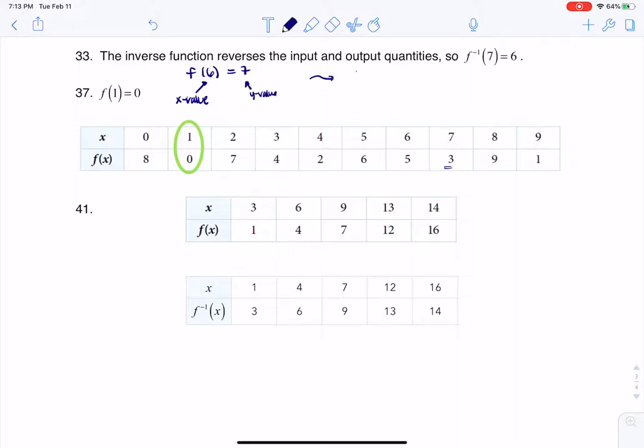Now if they ask us to find f inverse of 7, keep in mind when you go from the original function to an inverse function, we flip-flop the x and y values.